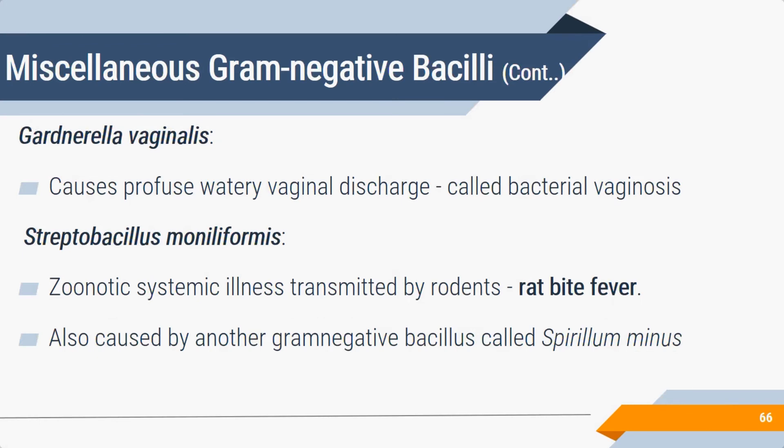Gardnerella vaginalis causes profuse, fishy-smelling vaginal discharge known as bacterial vaginosis. It attaches to vaginal epithelial cells, producing clue cells — an important short question topic. Streptobacillus moniliformis causes rat bite fever, a zoonotic systemic illness transmitted by rodents. Spirillum minus can also cause this condition.